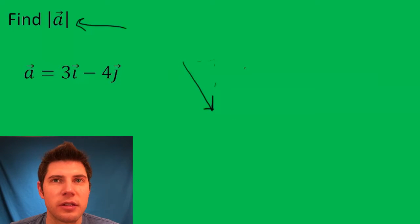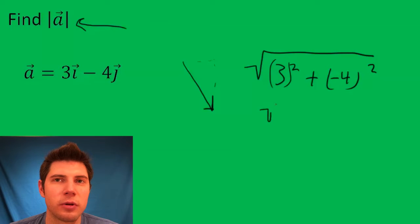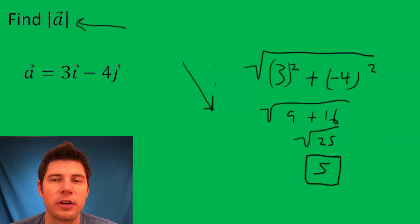Well, the way we do that is square root of 3 squared plus the negative 4 squared. So that's the square root of 9 plus 16, square root of 25. So the answer is 5. 5 is the magnitude of vector A.